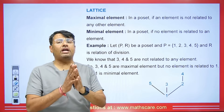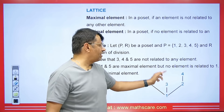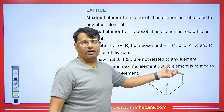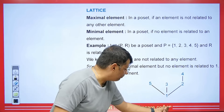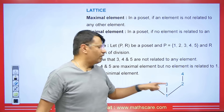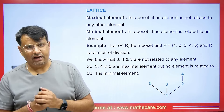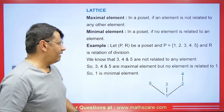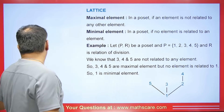What is a minimal element? A minimal element in a poset is an element where no other element is related to it from below. For example, 1 is related to 5, 1 is related to 3, 1 is related to 2, and 2 is related to 4. But nothing is related to 1 — there is nothing below 1. So 1 will be the minimal element.